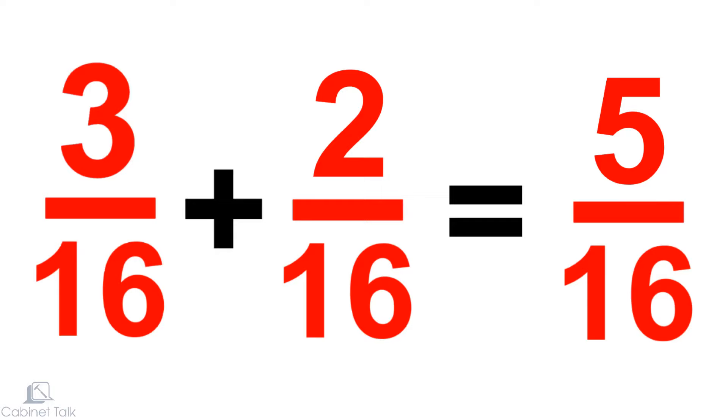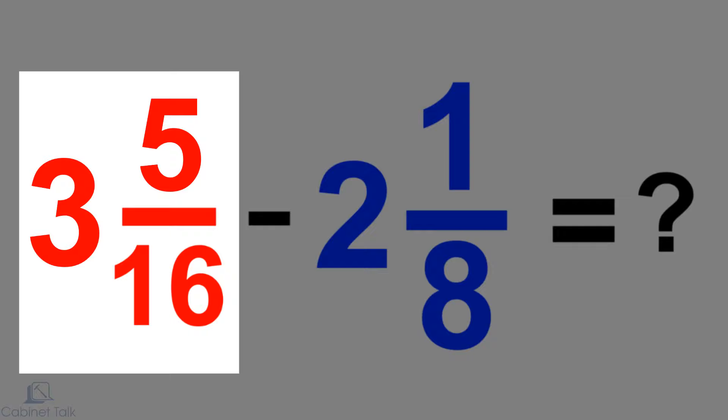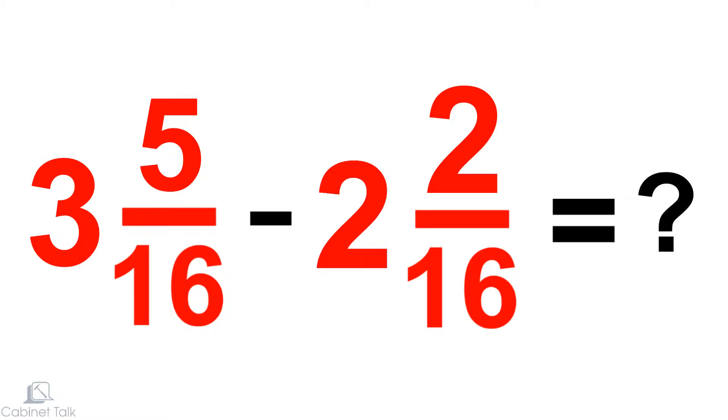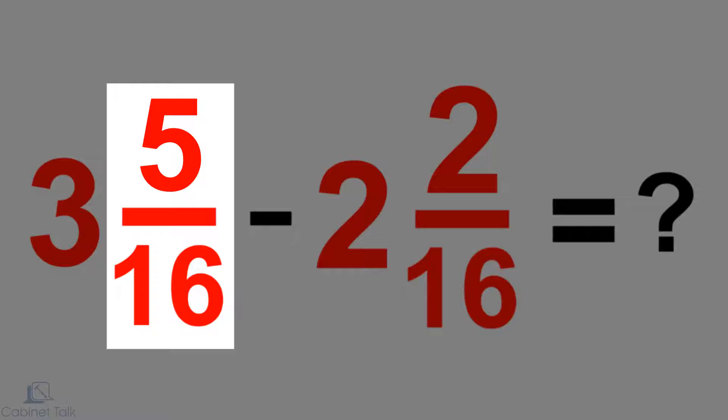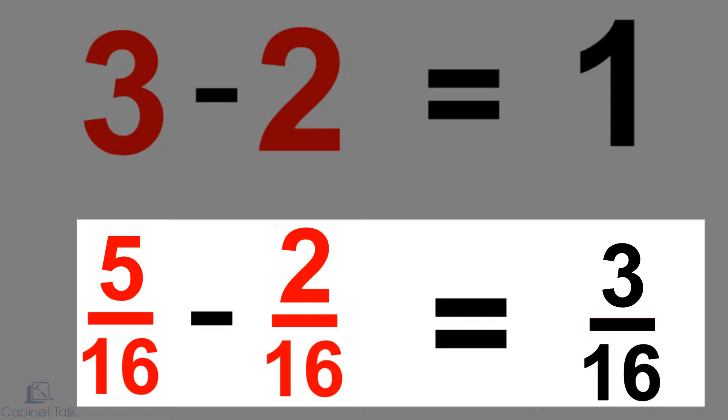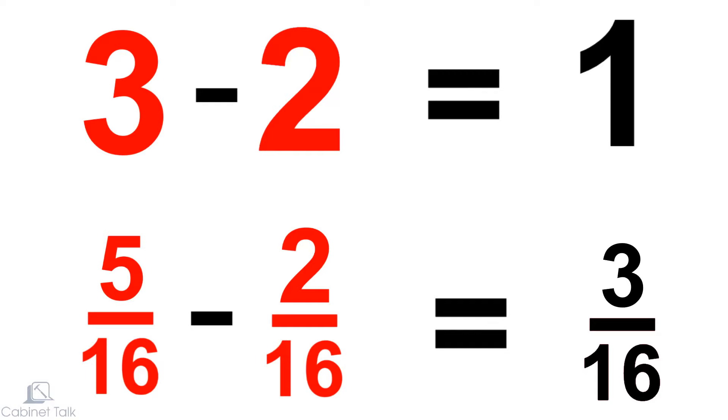Let's look at a harder example. What's three and five-sixteenths of an inch minus two and one-eighth of an inch? Start by converting one of the fractions. Another way of writing two and one-eighth is two and two-sixteenths. Now we can break the problem into two parts: three minus two and five-sixteenths minus two-sixteenths. Three minus two is one, and five-sixteenths minus two-sixteenths is three-sixteenths. The last step is to add these parts together. The answer is one and three-sixteenths of an inch.